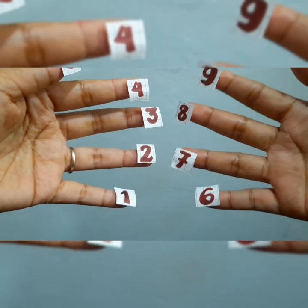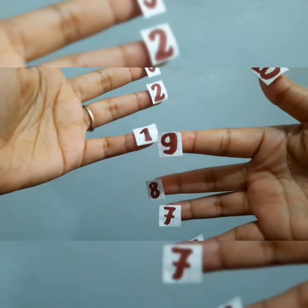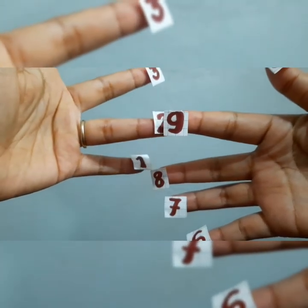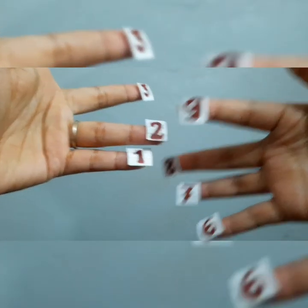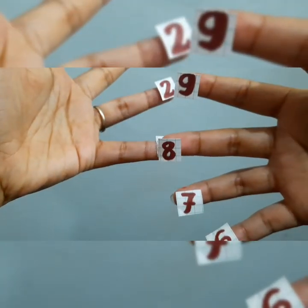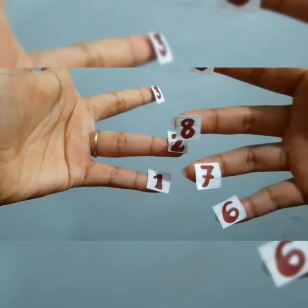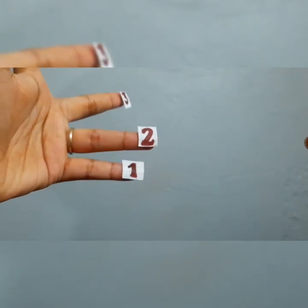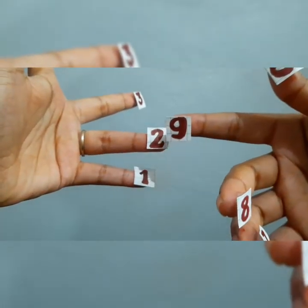How about let's try 9. 9 times 1, 9. 9 times 2, what are you going to do? You're going to add 9. 9 and 9 is 18. So 9 times 2 is 18.